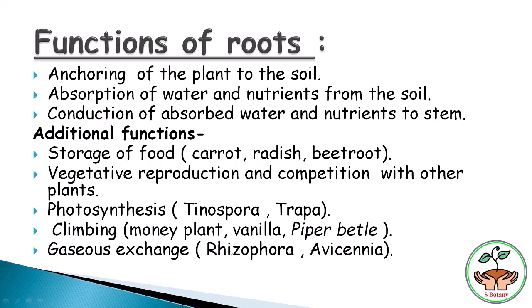In plants like Rhizophora and Avicennia, which grow in salty and marshy places with high salt concentration, roots are unable to take in essential gases for normal growth. To overcome this, these roots grow negatively geotropic — away from gravity towards the air — to assist in gaseous exchange. Such roots are called pneumatophores.